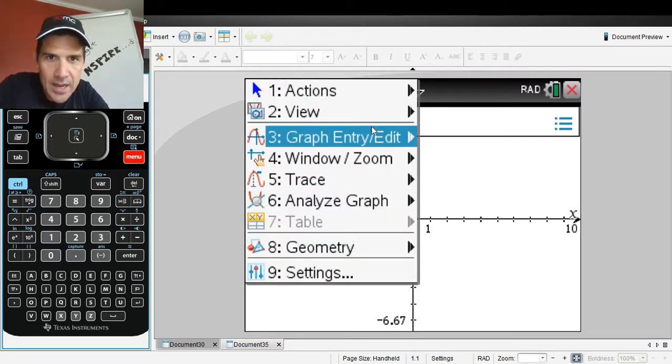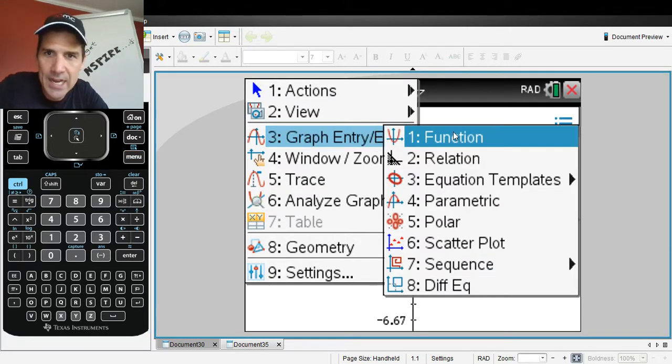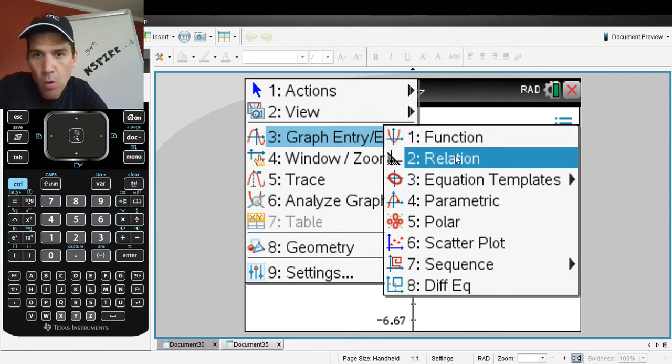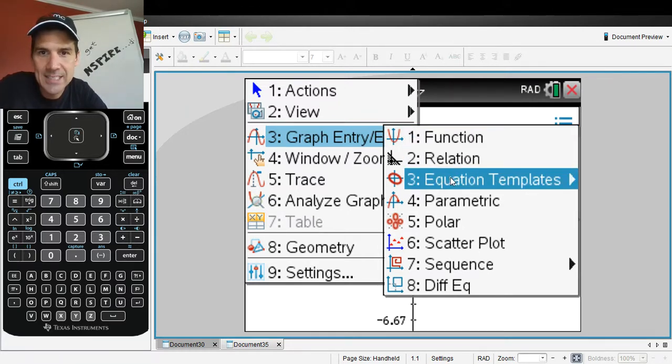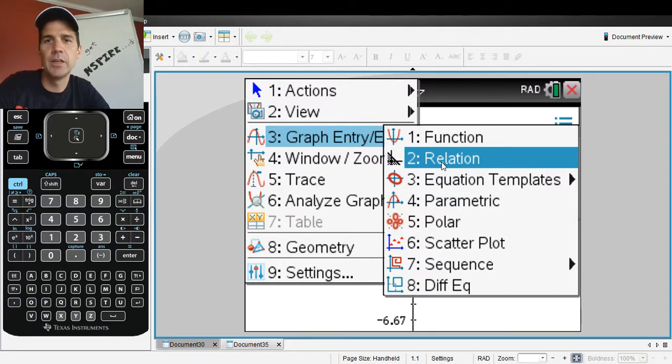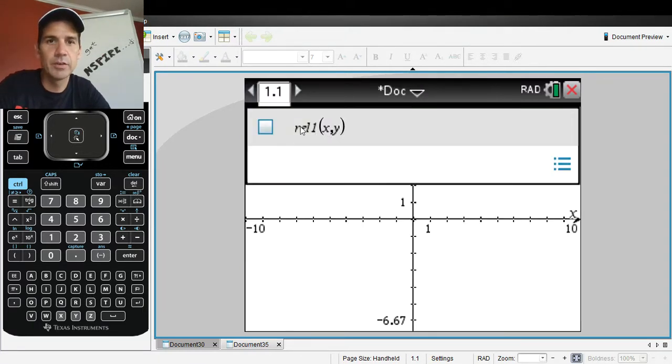You go to menu and then the kind of graph entry that we're doing, we're not in functions. We're going to either do a relation, or you can do all kinds of conics in here, but let's first start with the relation. Click on the relation.